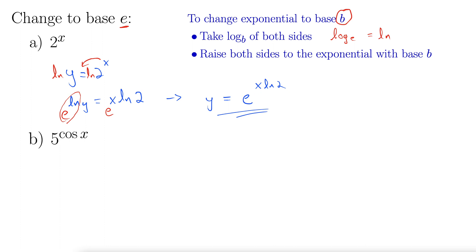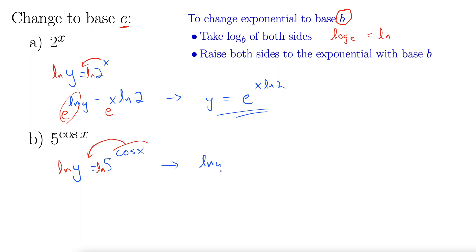The second example will work the same way. Here we have 5 to the cos x, so I'll write this as y equals 5 to the cos x. We're still changing to base e, so I'll hit both sides with the natural log. That will bring down this entire cos x. So now we have natural log of y equals cosine of x times natural log 5.